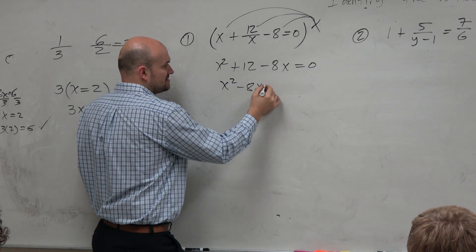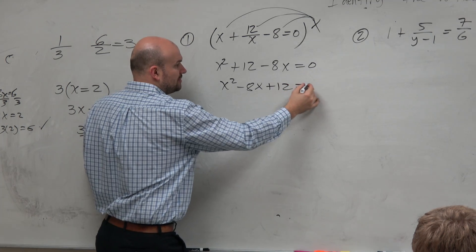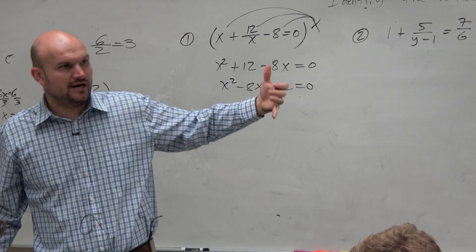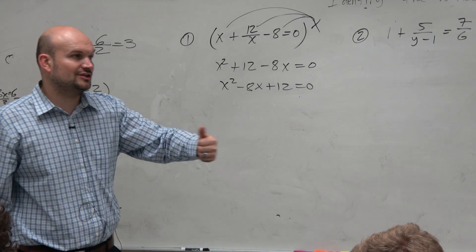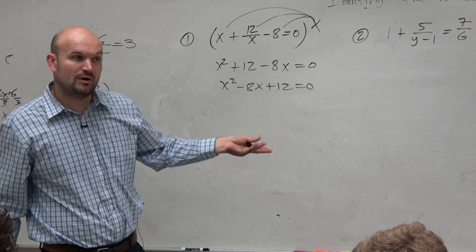So x squared minus 8x plus 12 is equal to 0. Now, I just got to think, how do I solve quadratics? Well, I could factor, I could complete the square, or I could use the quadratic formula.